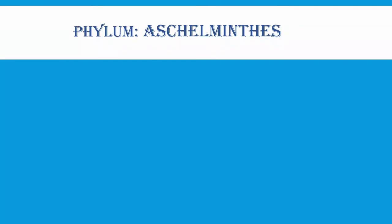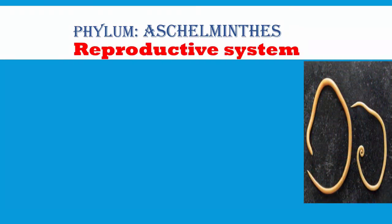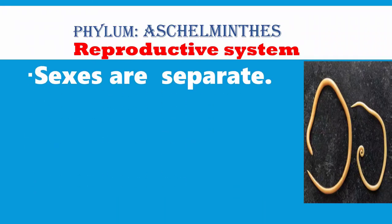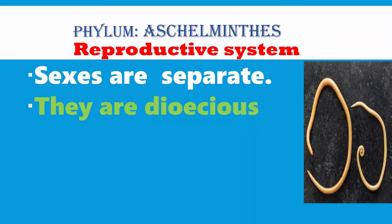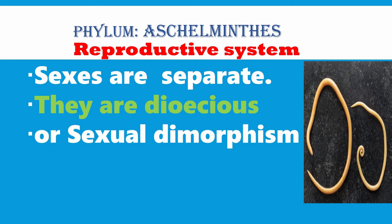The reproductive system: sexes are separate — male Ascaris and female Ascaris exist, and likewise other roundworms also have separate males and females. So they are dioecious, showing sexual dimorphism, and they reproduce sexually.